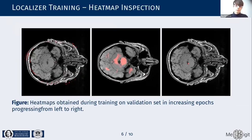The heatmaps can be used as a technique to observe the training progress. Here you see the input and the heatmaps as an overlay in red at increasing epochs. On the left is an early epoch and on the right a quite late epoch.